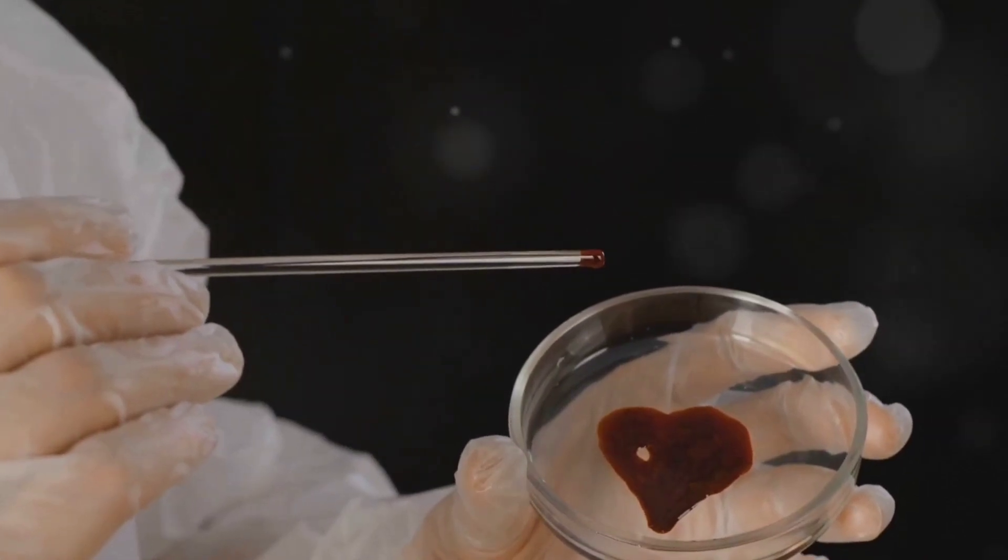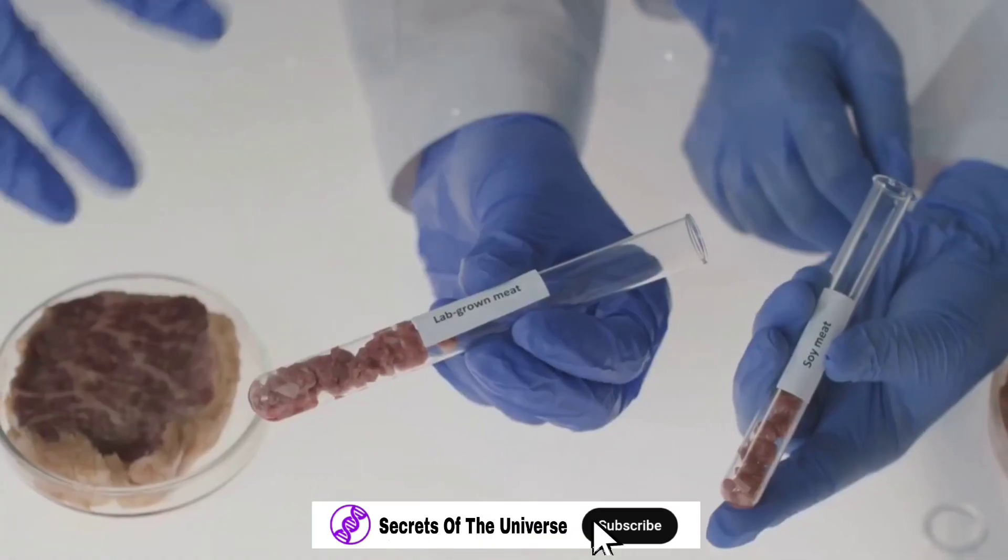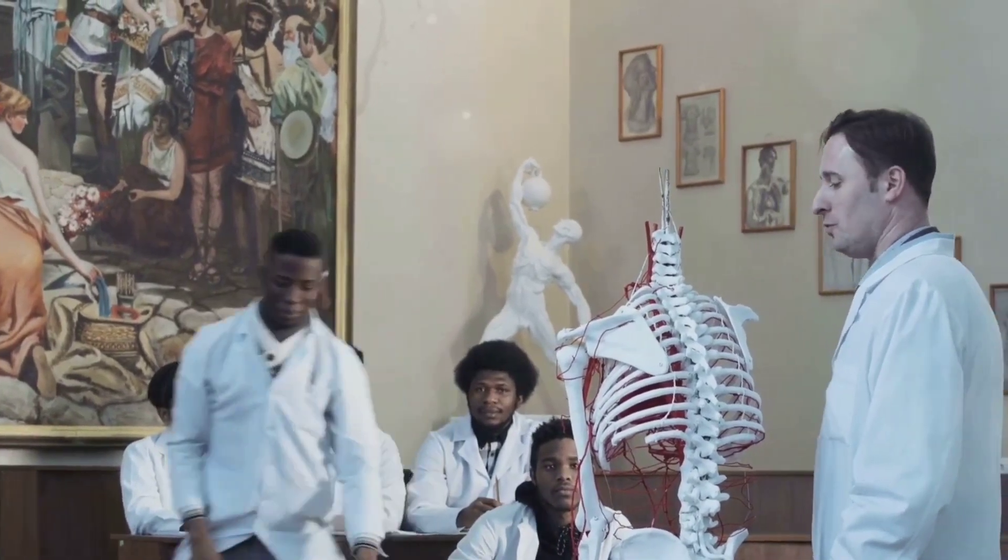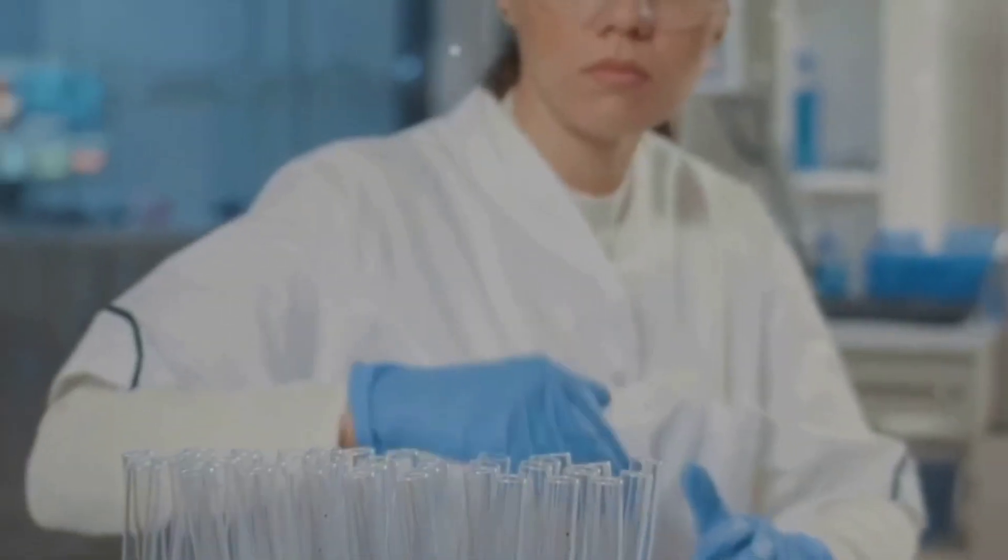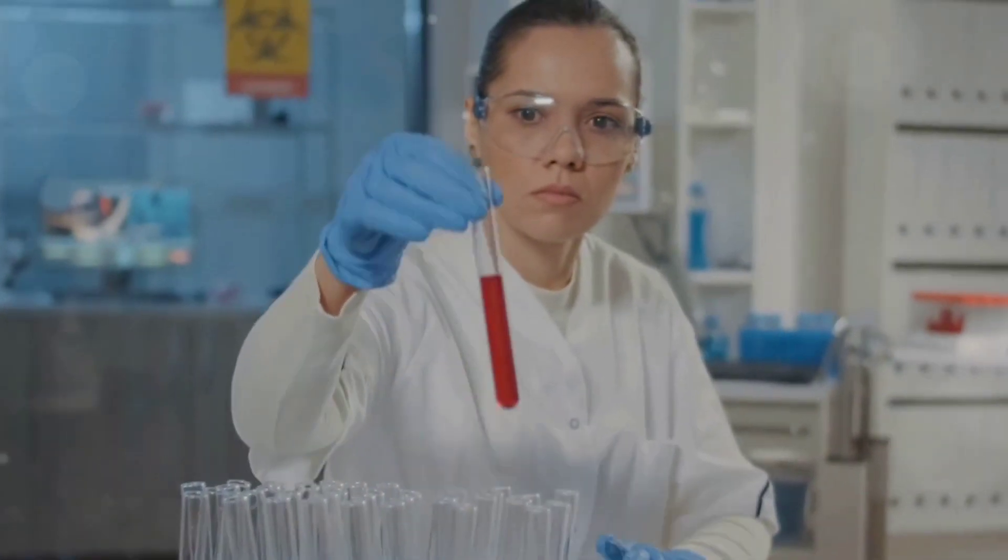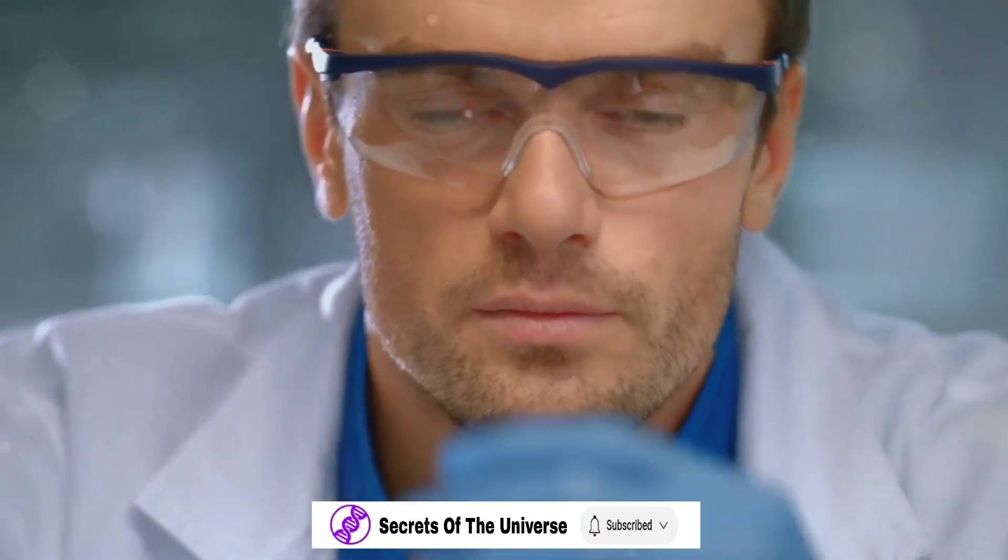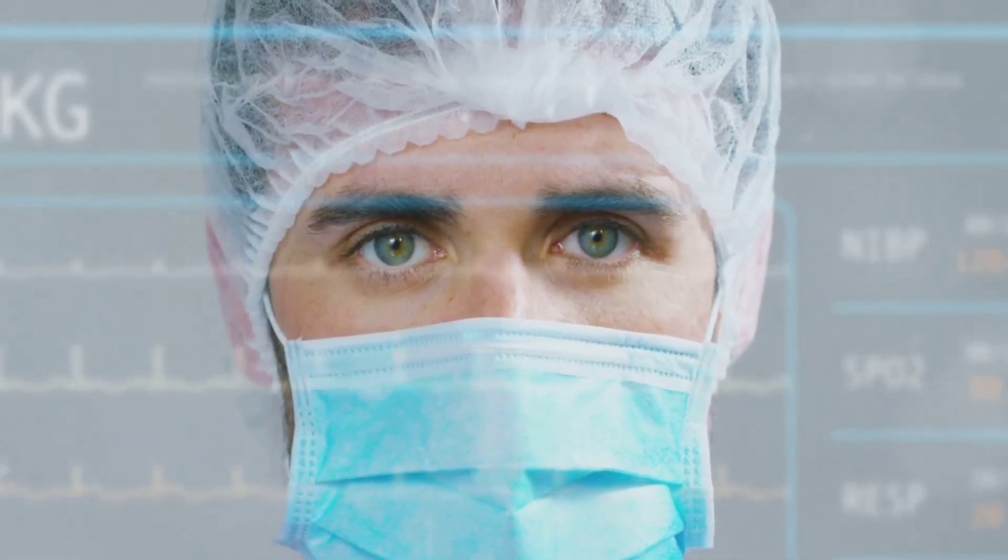So what if we could change our own organs? Imagine a world where the need for organ donors is a thing of the past, where we can simply grow a replacement heart, liver, or kidney in a lab, or even within our own bodies. The potential benefits are mind-boggling, from saving countless lives to making organ transplants more accessible and less risky. However, it's not all plain sailing. There are significant challenges to overcome, such as ethical considerations, technical hurdles, and the need for rigorous testing and regulation. But these challenges are not insurmountable. They are simply stepping stones on the path to a future where we can change our own organs. This future might seem like a far-off dream, but it's closer than you might think. The science is progressing rapidly, and the possibilities are endless. We just need to be ready for it.